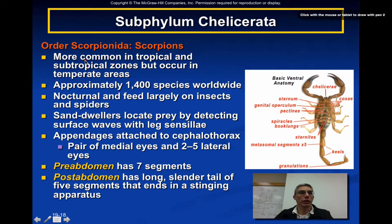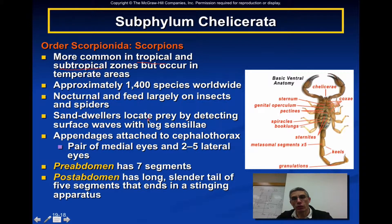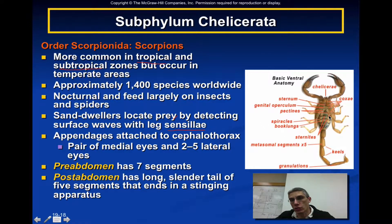Another order of arachnids is the order Scorpionidae — the scorpions. These are most common in tropical and subtropical zones but can also occur in temperate areas. There are approximately 1,400 species worldwide. They are primarily nocturnal and feed largely on insects and spiders. Sand-dwelling types locate their prey by detecting surface waves with leg sensillae — hair-like sensory structures. The appendages are attached to the cephalothorax.